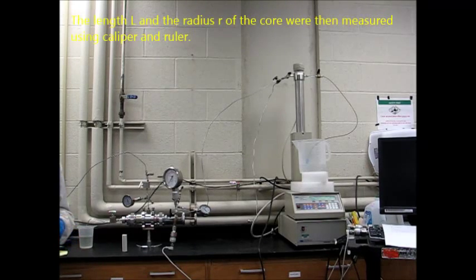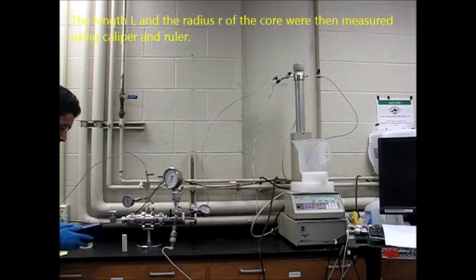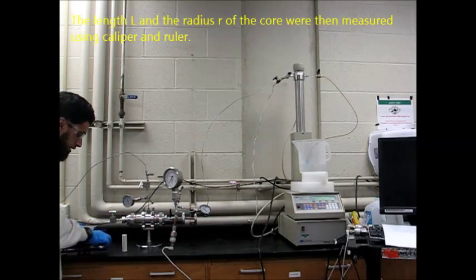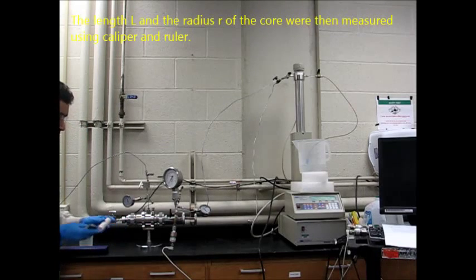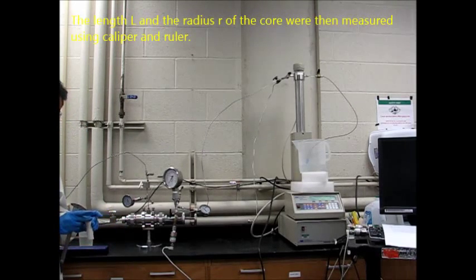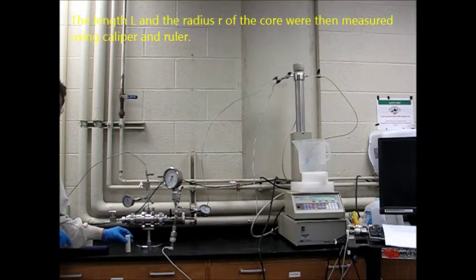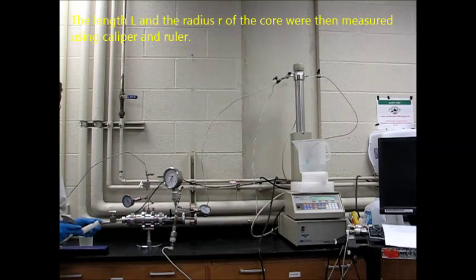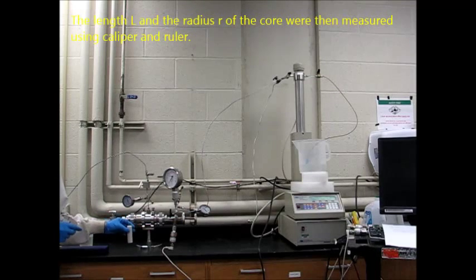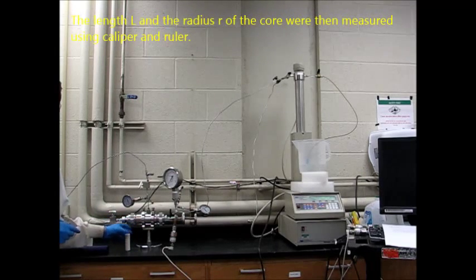The length L and the radius R of the core were then measured using a caliper and ruler. As I said, the length of our core sample is 7 inches and the radius is 1.25 inches.